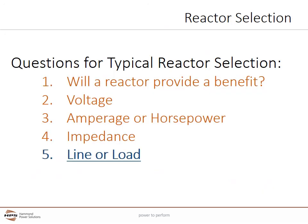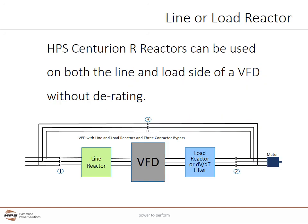Lastly, let's look at determining if we need a line or load reactor. Some manufacturers have separate reactors for line side or load side that cannot be interchanged, as the load side is a little rougher on reactors. HPS makes this easy: the HPS Centurion reactors can be used on both the line or load side of the VFD without any derating, as long as the current ratings are met.